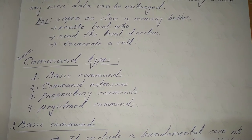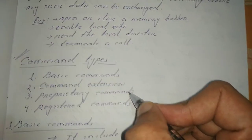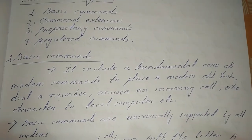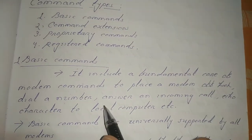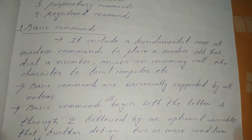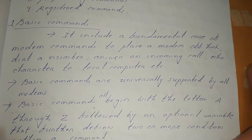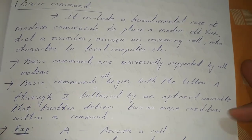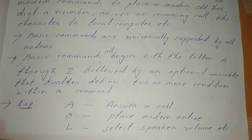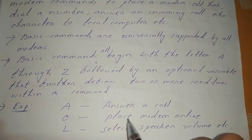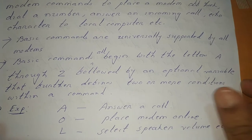The AT command set commands are categorized into four types: basic commands, command extensions, proprietary commands, and register commands. Basic commands are the fundamental core of modem commands, used to perform basic operations such as placing a modem off-hook, dialing a number, or answering a call. Basic commands are universally supported by all modems. Each basic command uses a single letter A through Z, sometimes with optional variables. For example, 'A' means answer a call, 'O' means place modem online, and 'L' means select speaker volume.